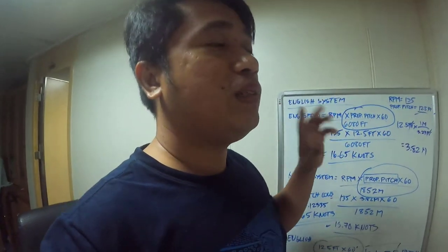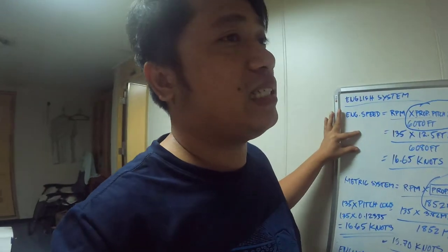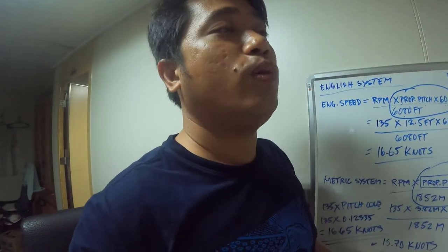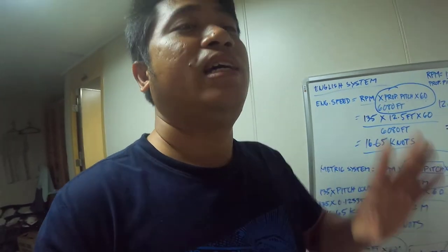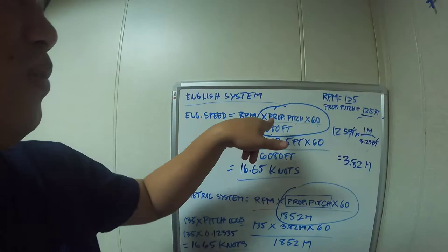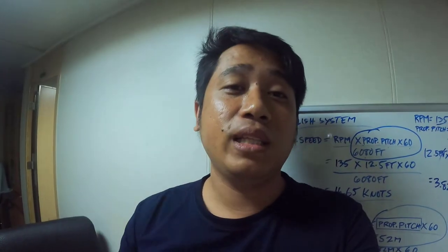The pitch constant you'll just find sometimes they print it and put it on the side, so when they compute they just get the RPM then multiply by pitch constant right away, because the pitch constant is just propeller pitch times 60 divided by 6080.